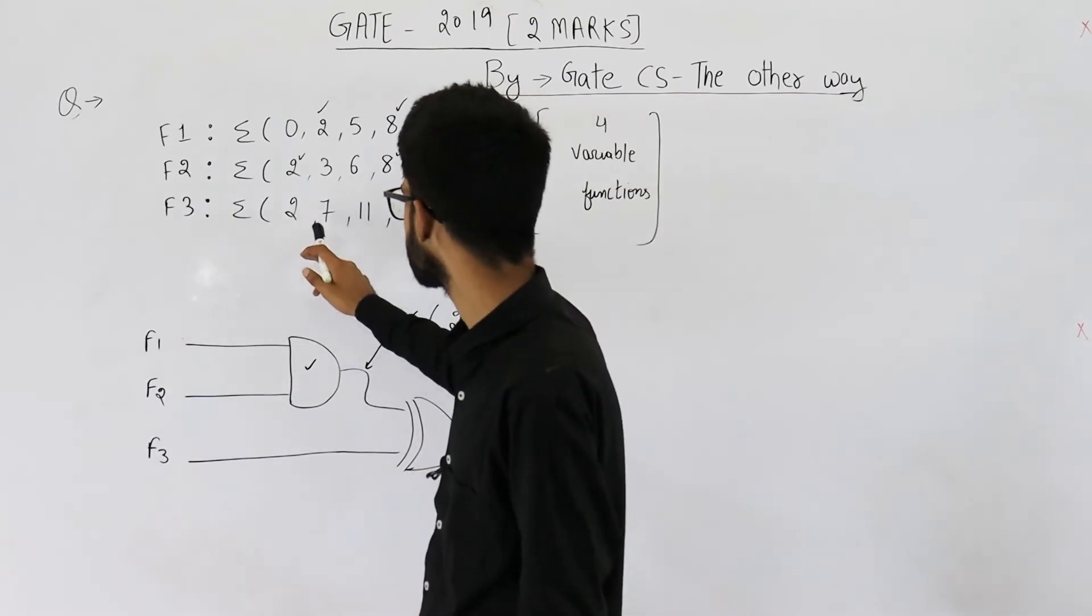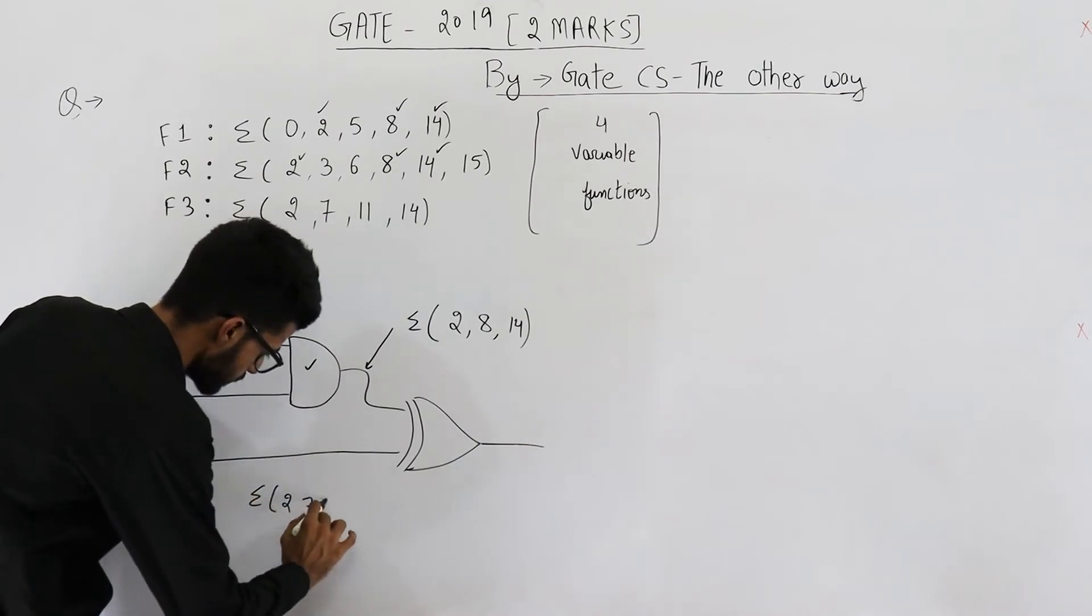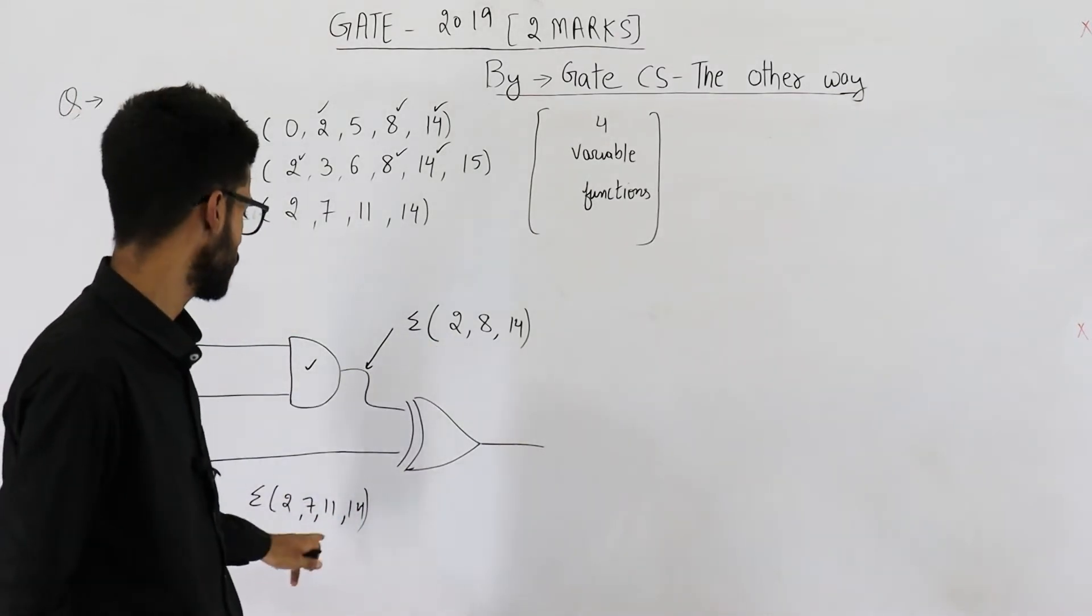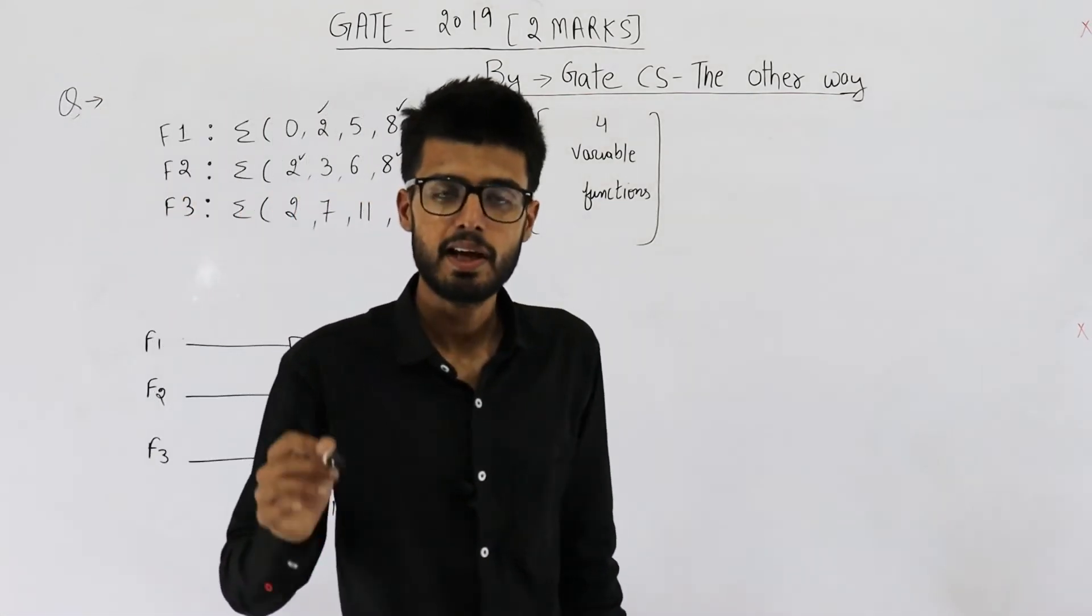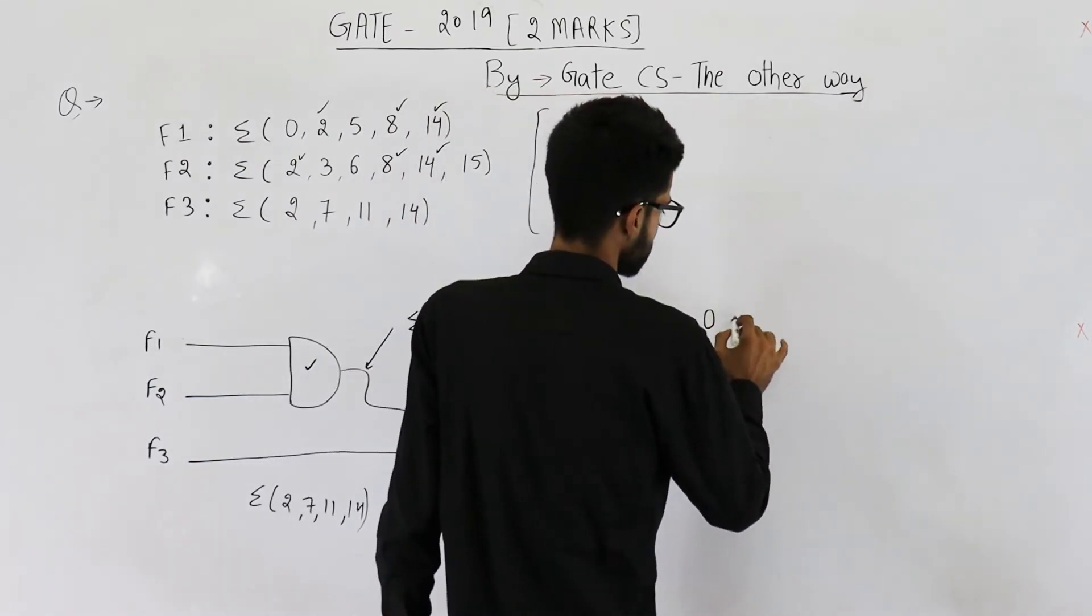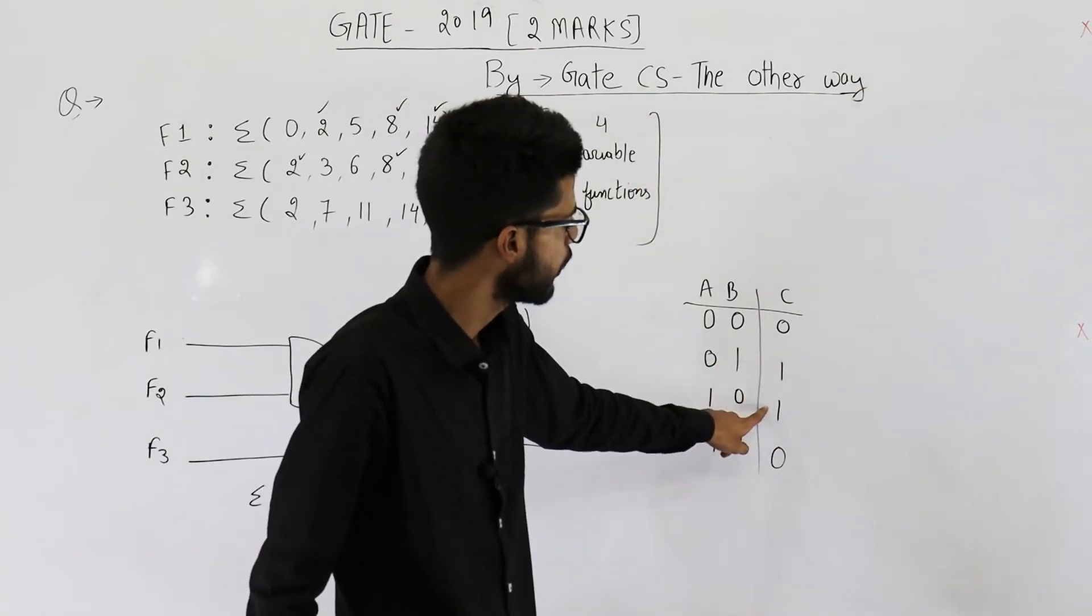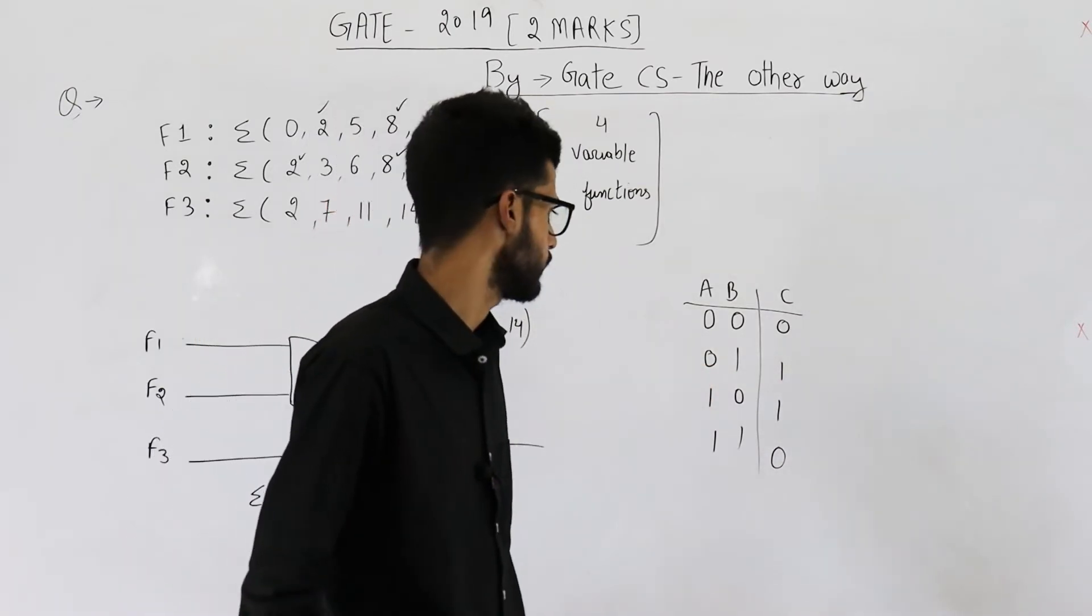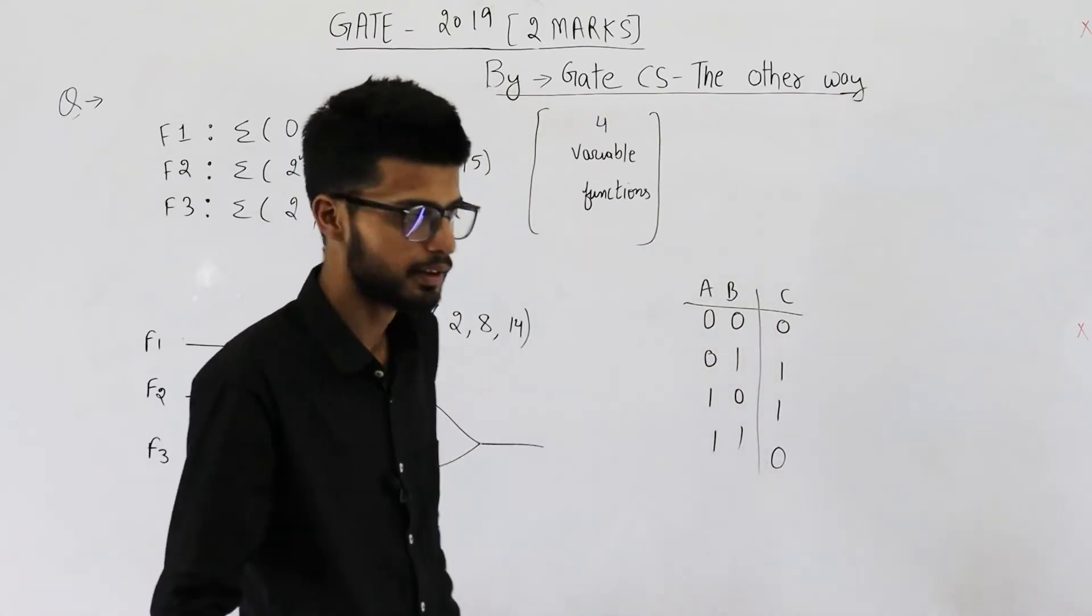F3 is 2, 7, 11 and 14. Let me write it here: 2, 7, 11 and 14. So you need to perform XOR of these two functions. XOR gate will output high when exactly one of its inputs is high. Let's write down the truth table here. You can see XOR gate will output high when exactly one of its inputs is on and the other input is off. If both are off it's 0, if both are on it's also 0.